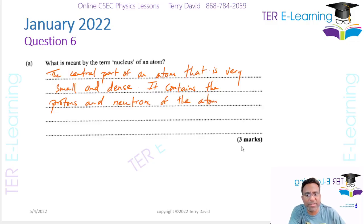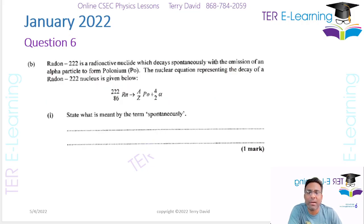The reason why I'm giving that extra piece of information here, because I'm seeing three marks here, so chances are they want a little more in this answer. Part B, we have radon 222 radioactive nuclei decays spontaneously with the emission of an alpha particle to form polonium. This is something that I always teach my students - they need to understand what is meant by the word random and what is meant by spontaneous.